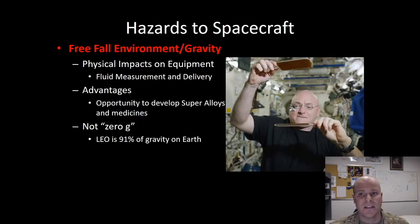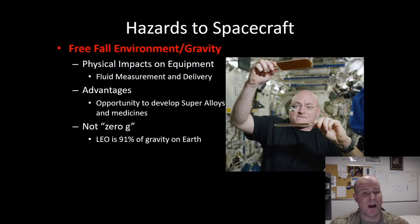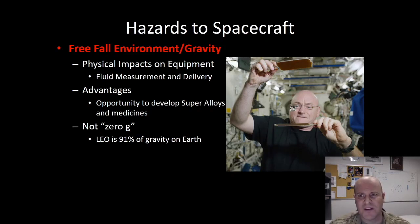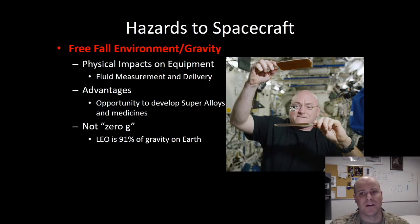Our next hazard is that of freefall. The freefall environment for our spacecraft means there are no contact forces, which is good for experimentation and mixing of materials. However, it can be frustrating for engineers as it's hard to know how to handle liquids exactly in that environment. Notably, the spacecraft is in freefall around the Earth in its orbit, not zero-g as often incorrectly stated.